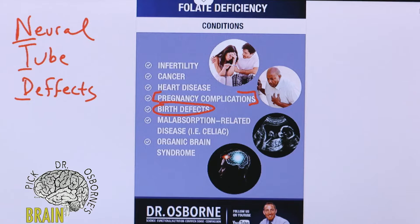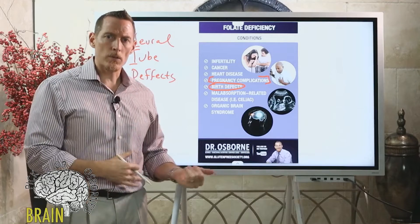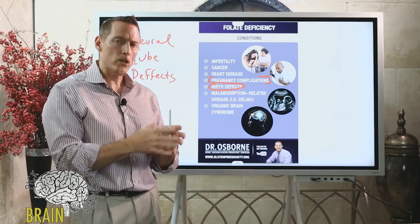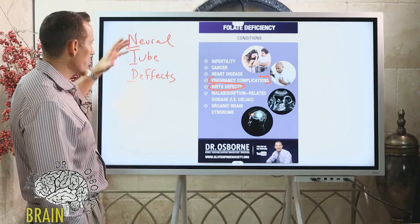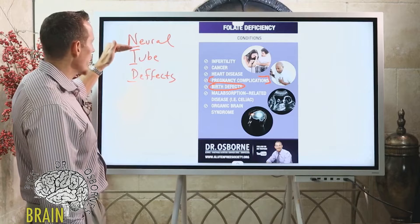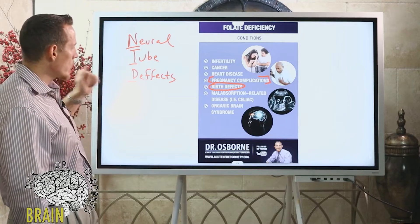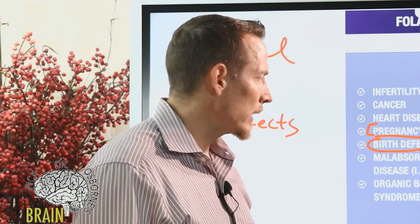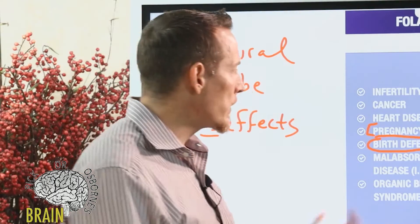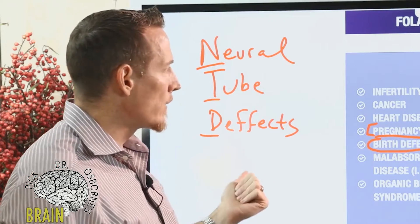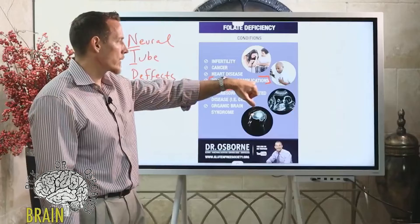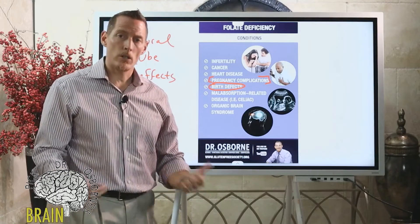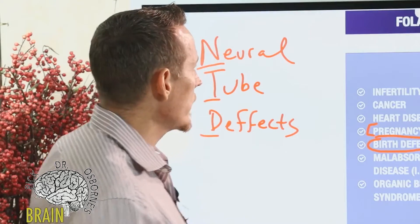Neural tube defects include diseases like spina bifida and cleft palate. When a baby is growing and the neural tube is maturing and forming, folate deficiency leads to DNA damage that contributes to these defects. Some children are also born with tongue ties — potentially linked to the mother having low folate during pregnancy. Folate deficiency can also cause pregnancy complications such as spontaneous abortion or miscarriage.